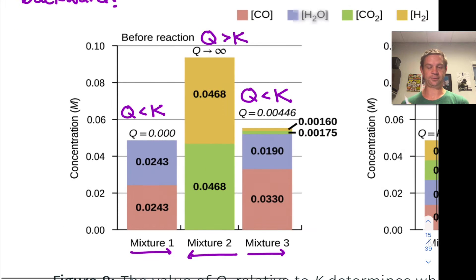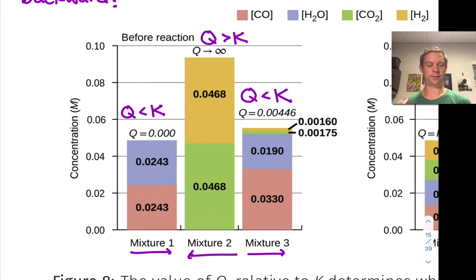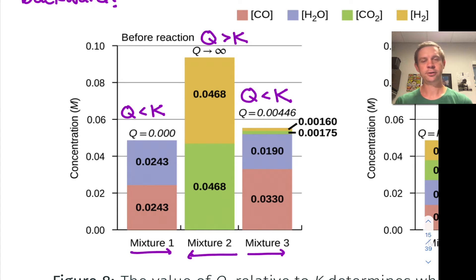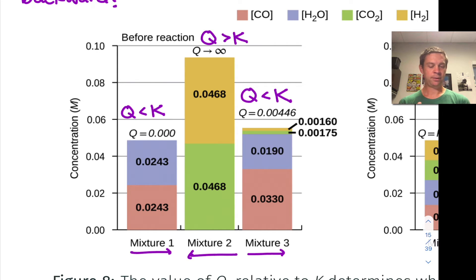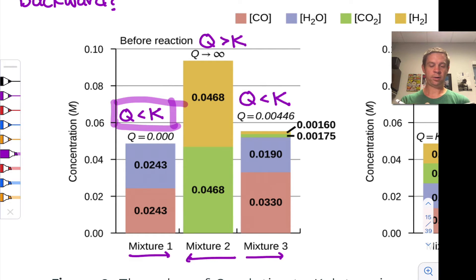In mixture 1, we have no products — no CO₂ and no H₂. In mixture 2, we have no reactants, only CO₂ and H₂. In mixture 3, we have a little bit of both products and reactants. Q is calculated for each case using product concentrations raised to their stoichiometric coefficients divided by reactant concentrations raised to theirs. Comparing to K, mixtures 1 and 3 have Q less than K (boxed in purple), while mixture 2 has Q greater than K.